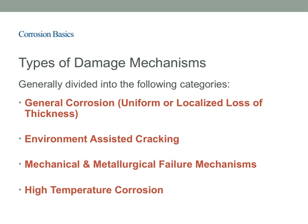Understanding these categories helps us identify, prevent, and mitigate corrosion-related failures in various engineering applications. Each mechanism has unique characteristics and challenges, but recognizing them is a crucial step in maintaining the integrity of our materials and structures.